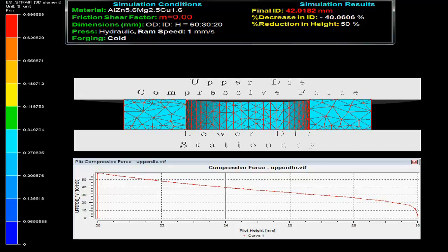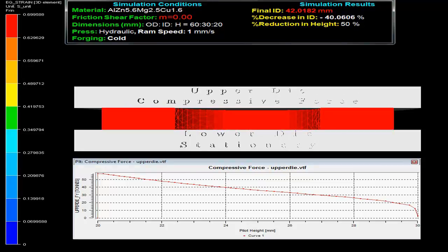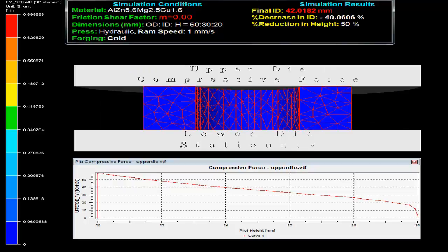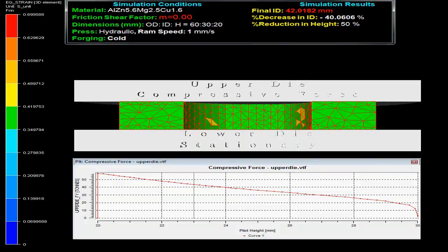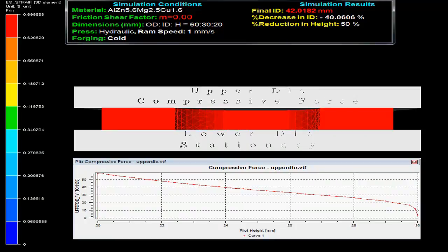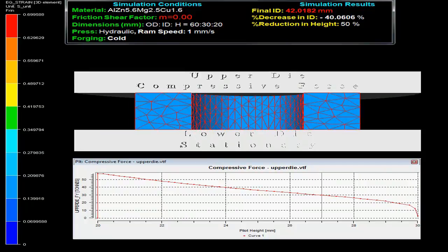Ring compression test has widely been used to evaluate friction conditions in metal forming processes. The video shows a short-ring specimen being plastically compressed between two flat dies, with the lower die stationary and the upper die movable.